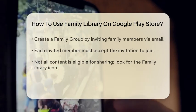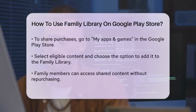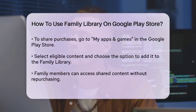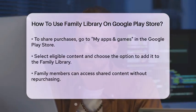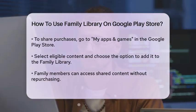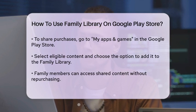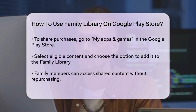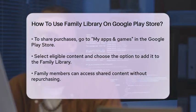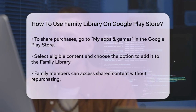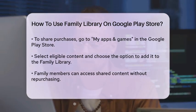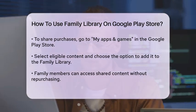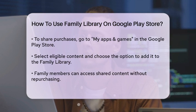To add eligible purchases to your Family Library, go to the My Apps and Games section in the Google Play Store. Here you will find a list of your purchased items. Select the content you wish to share and look for the option to add it to the Family Library.